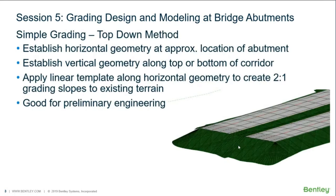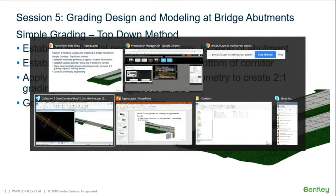The first method is the simple grading method — useful when you don't need much detail and are doing preliminary engineering. It starts with creating basic horizontal geometry at the approximate location of your abutment or approach slab, then some vertical geometry along the top or bottom of the corridor. From there, we apply linear templates to create two-to-one grading slopes down to the existing ground terrain. This is what we'll demonstrate first: basic fill slopes in your corridor for bridge grading.